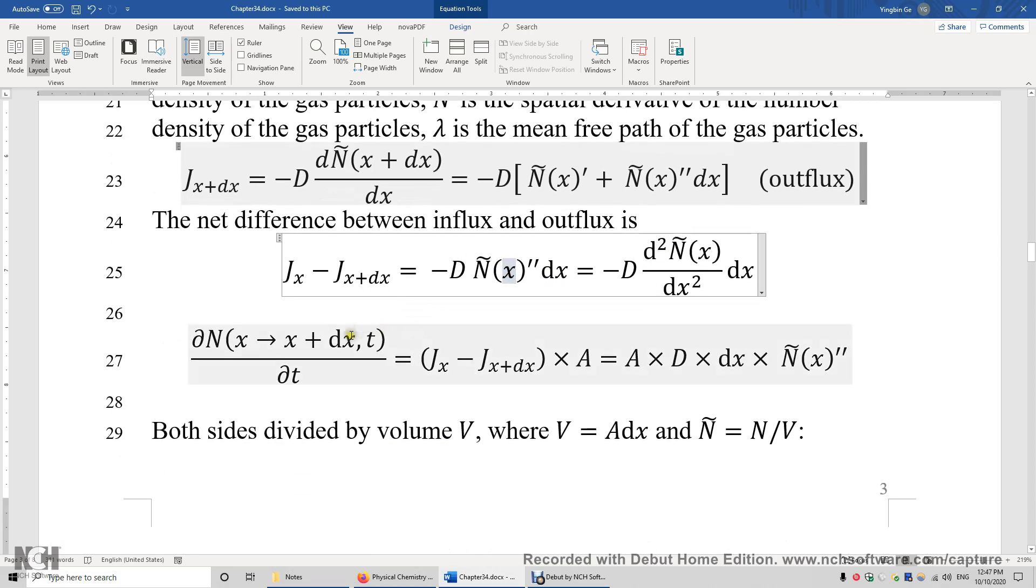Now we can calculate how the number of particles inside this volume from x to x plus dx at time t changes with time. So it's influx minus outflux times the area, and then we get this equation.